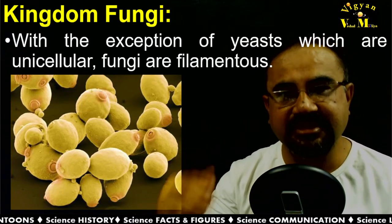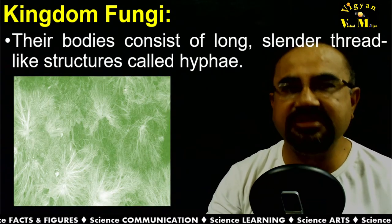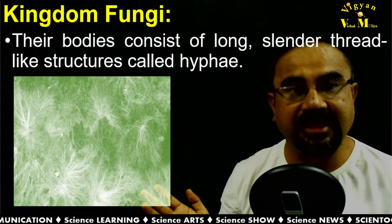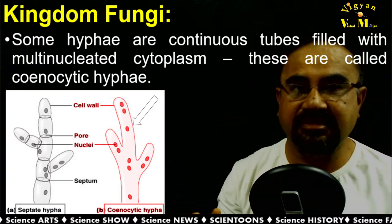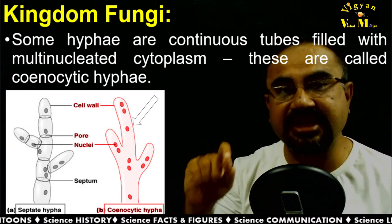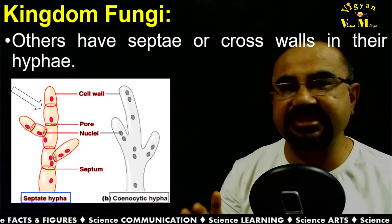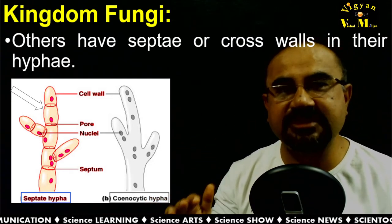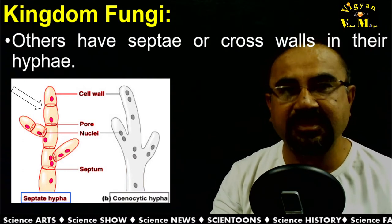Generally fungi have a filamentous structure — one exception is yeast, which is unicellular. Most fungi are filamentous, with bodies consisting of slender thread-like structures called hyphae. The network of hyphae is known as mycelium. Mycelium can be coenocytic — with multinucleate cytoplasm — or it can be septate, where cross walls are present containing one or more nuclei.